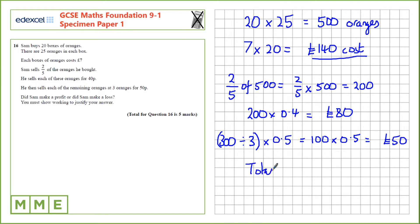So the total income is £80 plus £50 which is £130. If we want to find profit we take away the cost from the income, so that's £130 minus £140 which is negative £10. So that's a loss of £10.